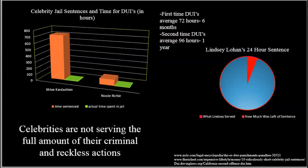Another example, on a very different topic, has to do with celebrity jail sentences and time served for DUIs. This person shows that Khloe Kardashian got a certain number of hours she was supposed to serve in prison, but the actual time spent was next to nothing. Same with Nicole Richie and Lindsay Lohan, who had a 24-hour sentence but only served a tiny fraction of it. This student was talking about how celebrities need to be held more accountable for their crimes, and these visual arguments help show that.